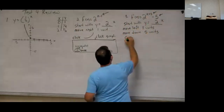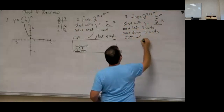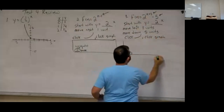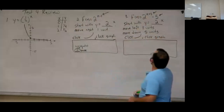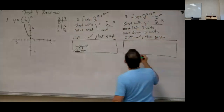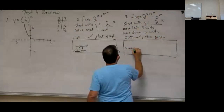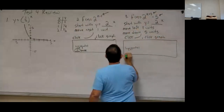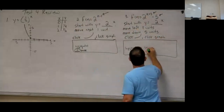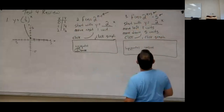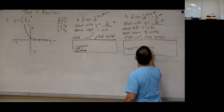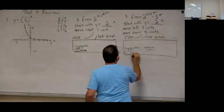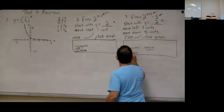Do the same thing: click the curvy graph, then click on the graph to open your box. This time you have both a horizontal and a vertical move. Horizontal went left three, so move it to negative three. Vertical went down five, so go to negative five. And remember in the little corner, change that base from E to a 2.